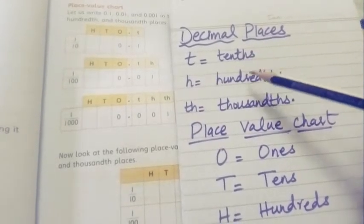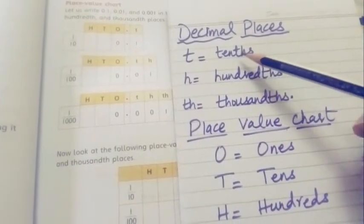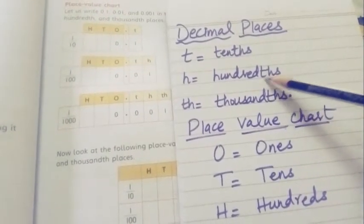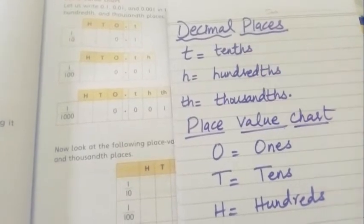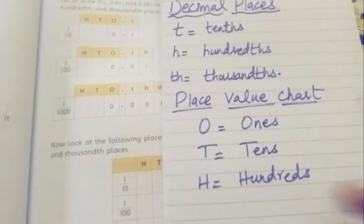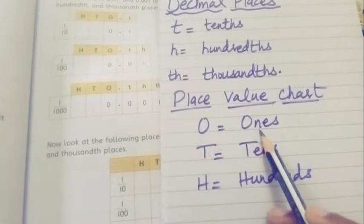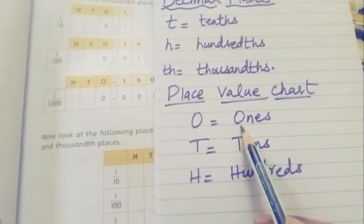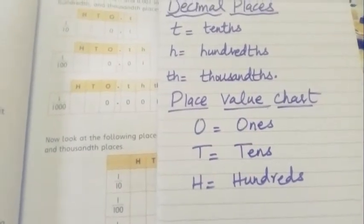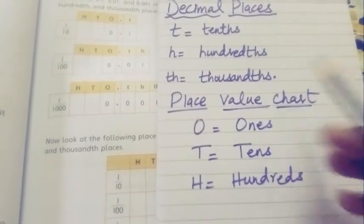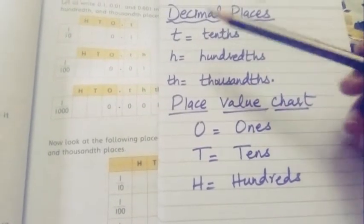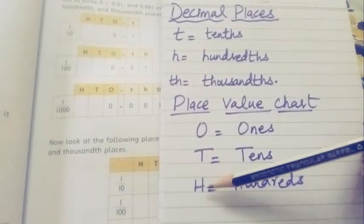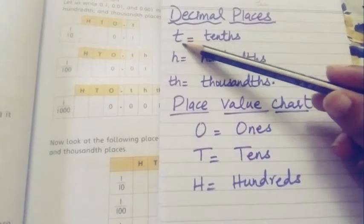These place values are tenths, hundredths, and thousandths — written as THS, THS, and THSR — meaning they are positions after the decimal point. O represents ones, T represents tens, and H represents hundreds. So you will have place values: small t, small h, small th, capital O, capital T, capital H. You need to know which letter stands for which position.